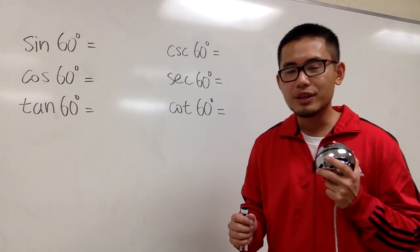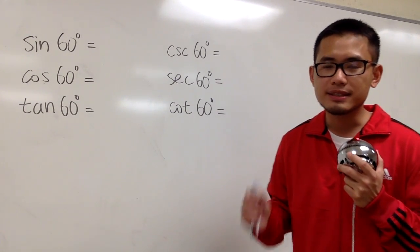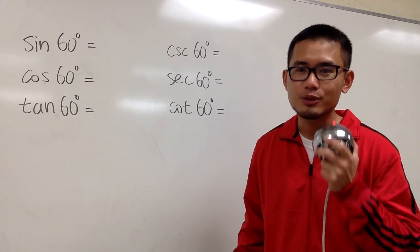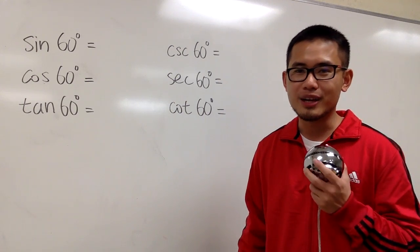Okay, we are going to figure out all the trig function's values when the angle is 60 degrees. And once again, we have to remember our special triangle, the 30-60-90 special right triangle.